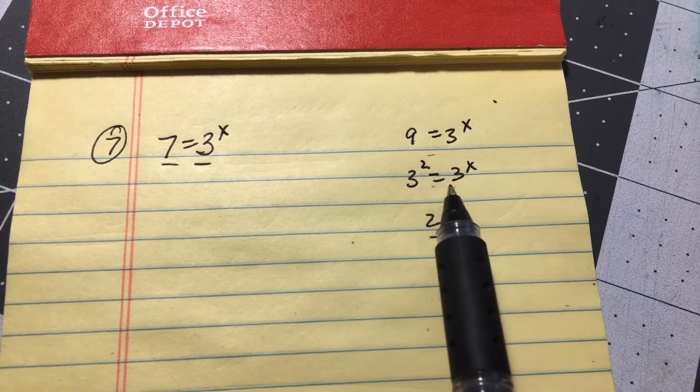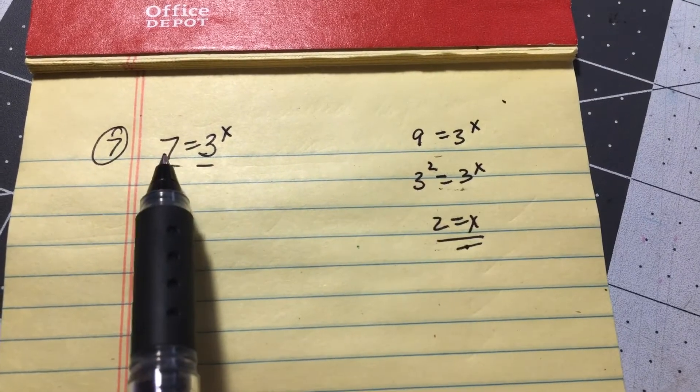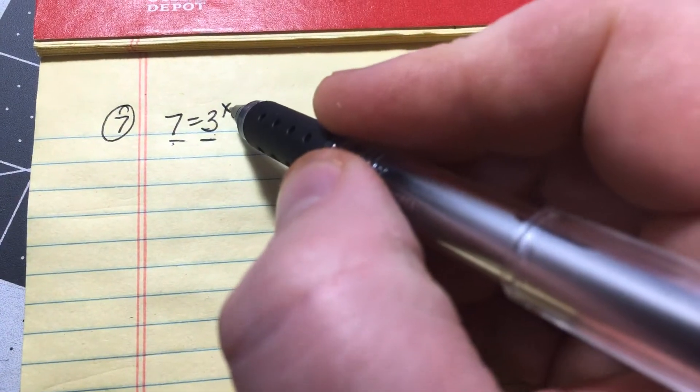we can change that nine into another base of three, then we just make our exponents the same. But we can't do that on this one. No way to make a seven into a three. So then what I always...